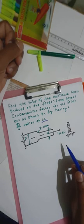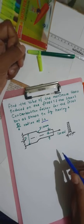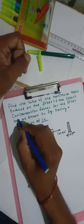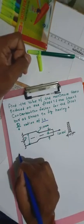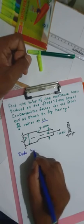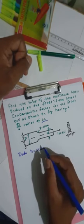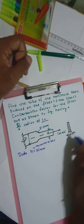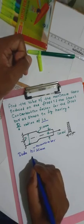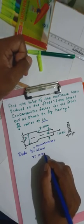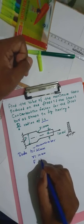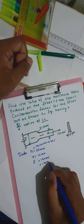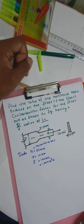We need to note down the given data. For the thickness of the bar: H is equal to 25 mm. The fillet radius R is equal to 10 mm. The axial load is 120 kilo Newton, which we can convert to 120 × 10³ Newton.